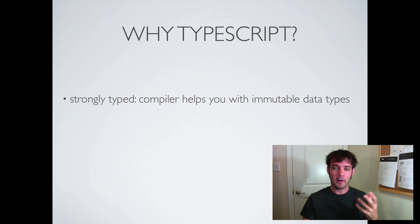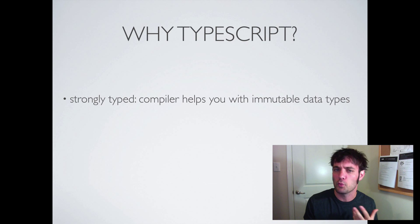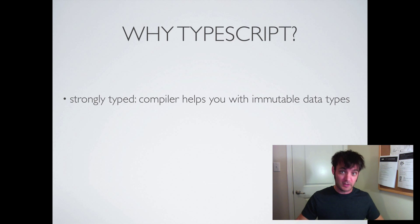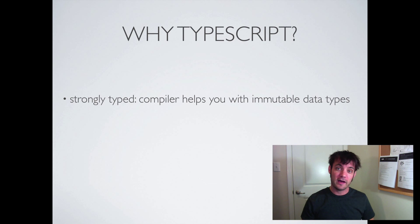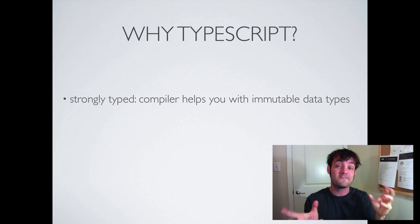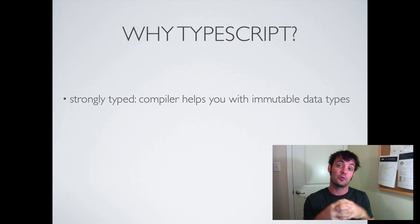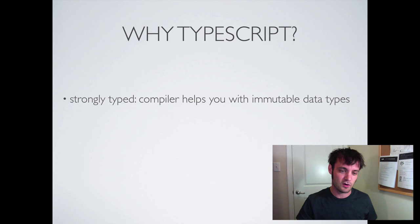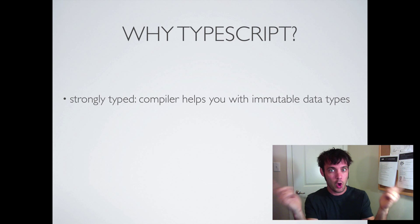It's strongly typed — the compiler helps you with immutable data types, so numbers are numbers. You can define types on classes whether you're doing simple function calls or MVC frameworks like Backbone or Angular. The compiler will help you verify that everything is wired up correctly before you even attempt to run it or test it — before you even run your unit tests.